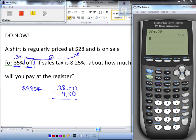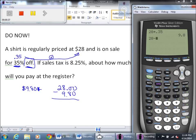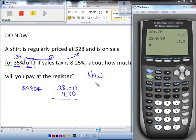I'm going to do that on the calculator. So I'm going to do $28 minus $9.80. And so that means right now, right now that shirt is $18.20.